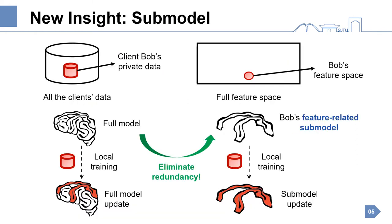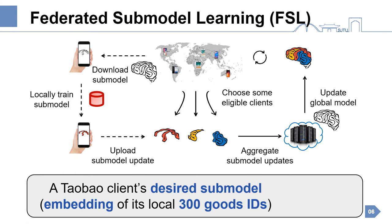To improve efficiency, we observe that the input data of a client normally involves a small subspace of the full feature space. Thus, the client tends to need only part of the full model that is related to its features, called a submodel. After local training, only the submodel will be updated. Based on the concept of submodel, we propose a federated submodel learning framework, which is quite efficient for distributing complex learning tasks on mobile clients. For example, the desired submodel of a Taobao client contains only the embedding of its local goods IDs, and the size is less than 1 megabyte. If the submodel degenerates to the full model, federated submodel learning degenerates to conventional federated learning, making our framework more general.